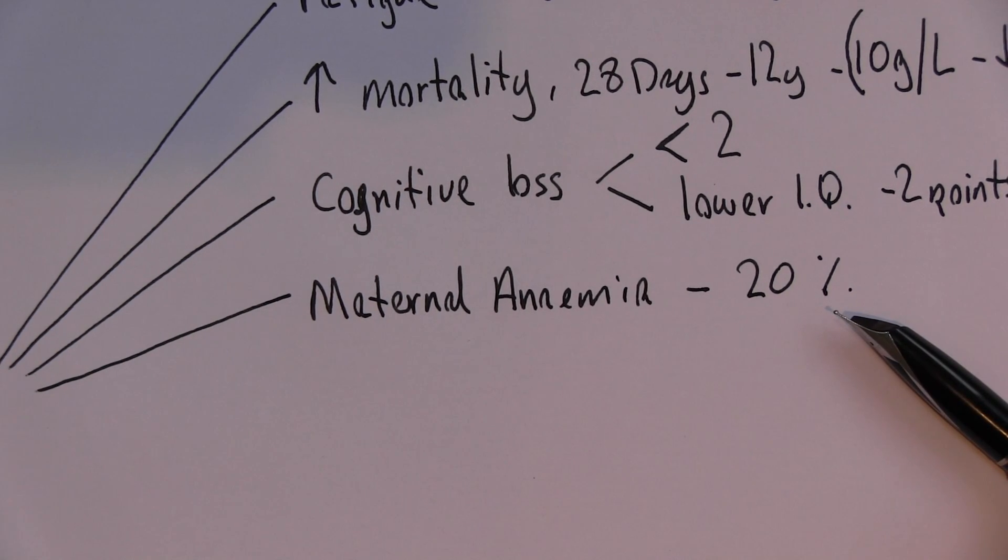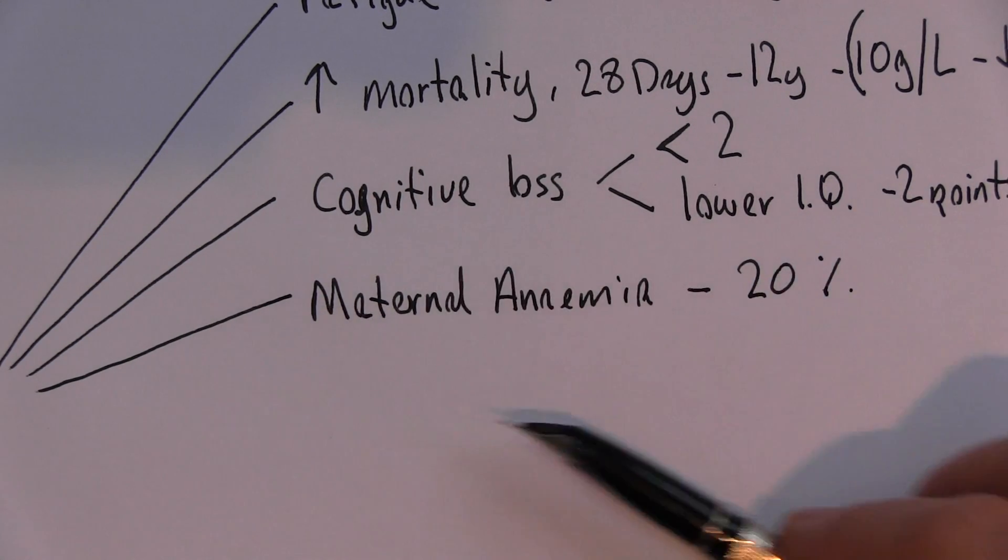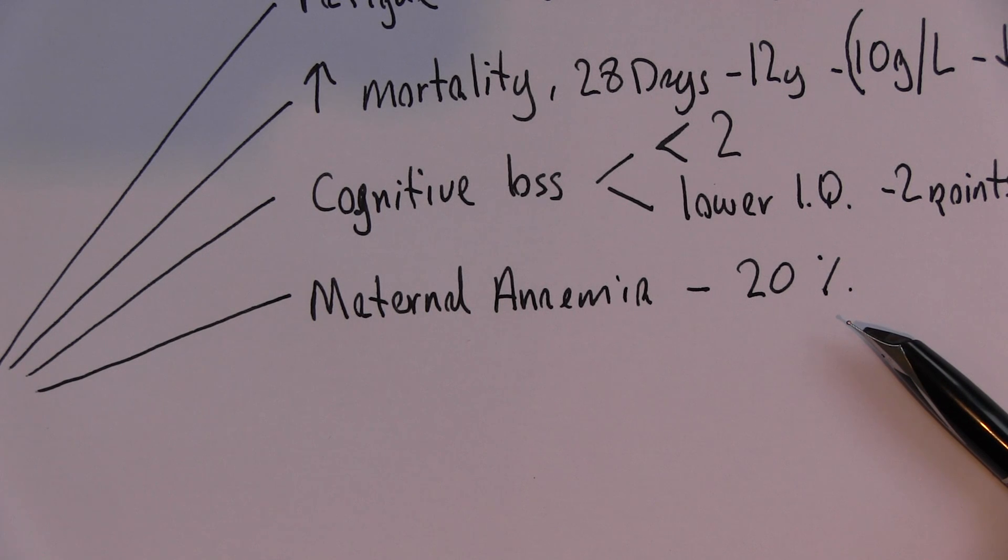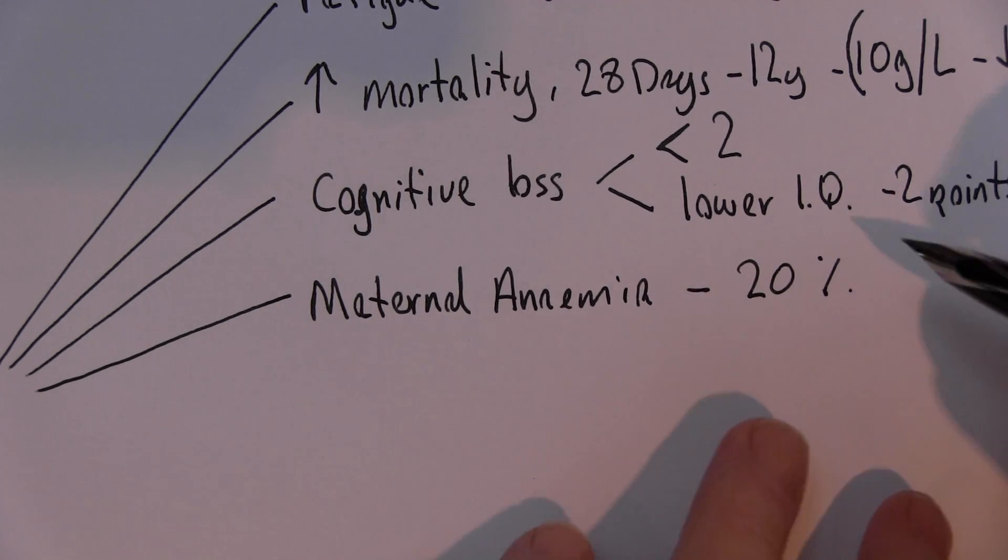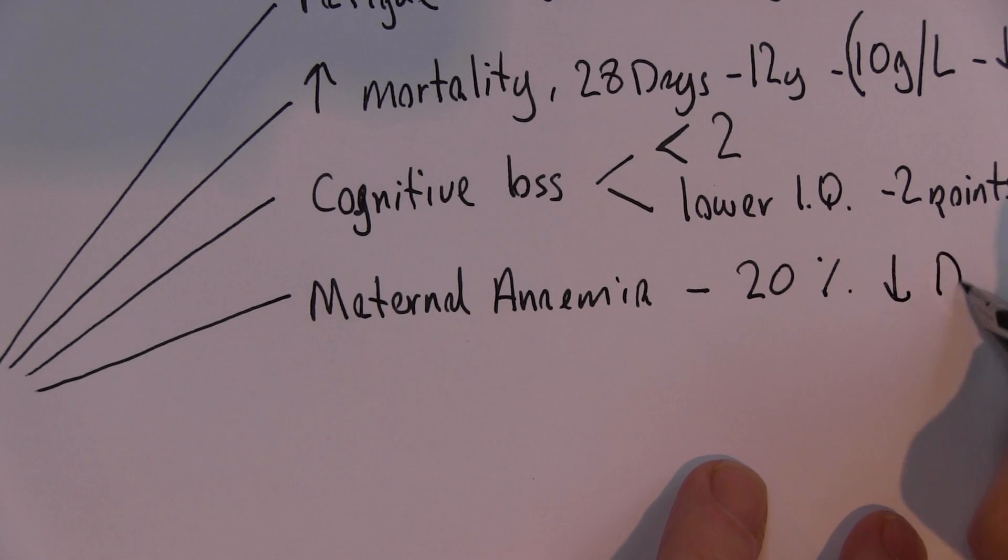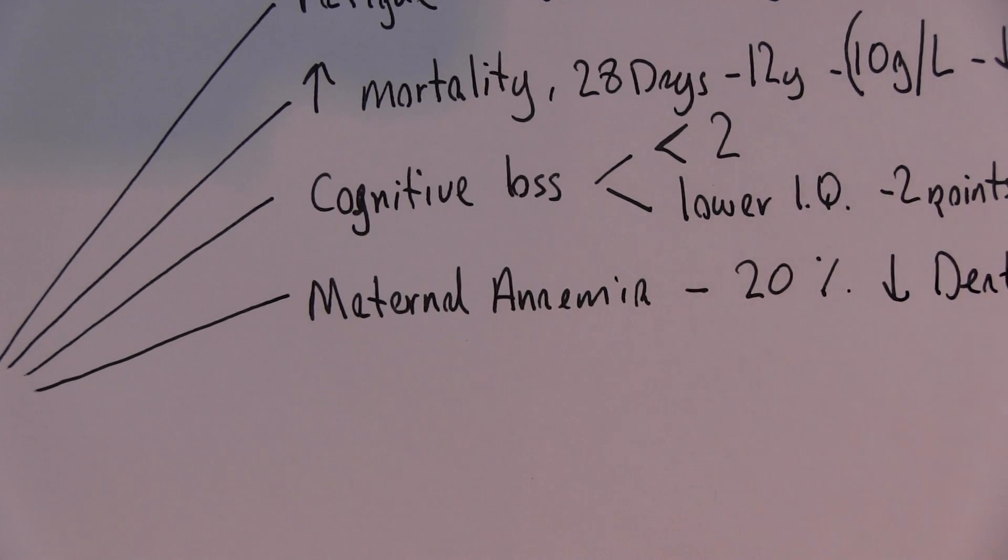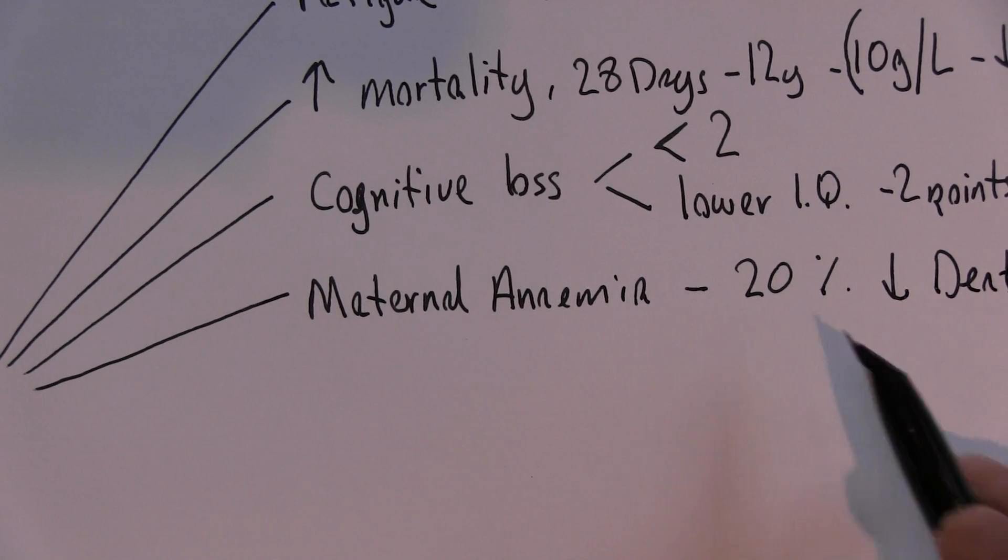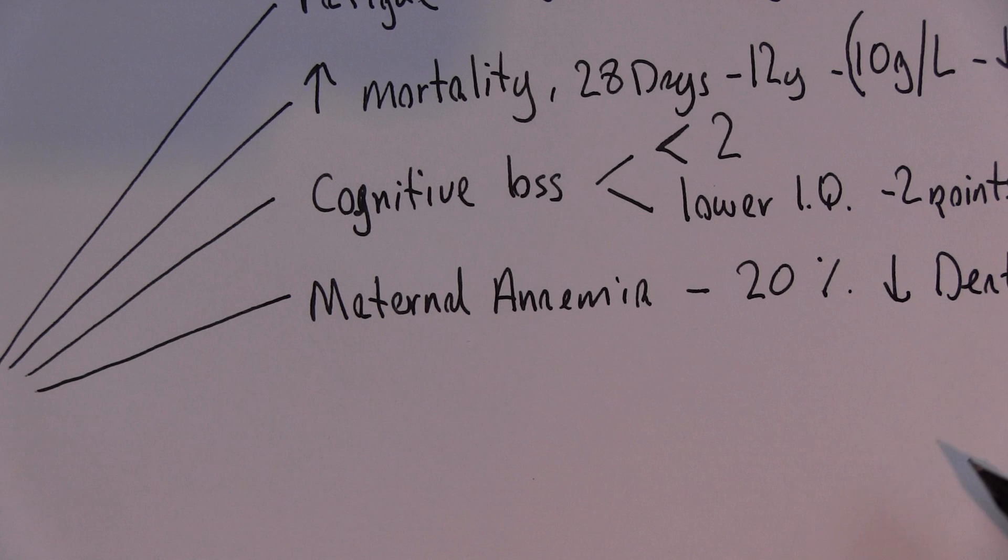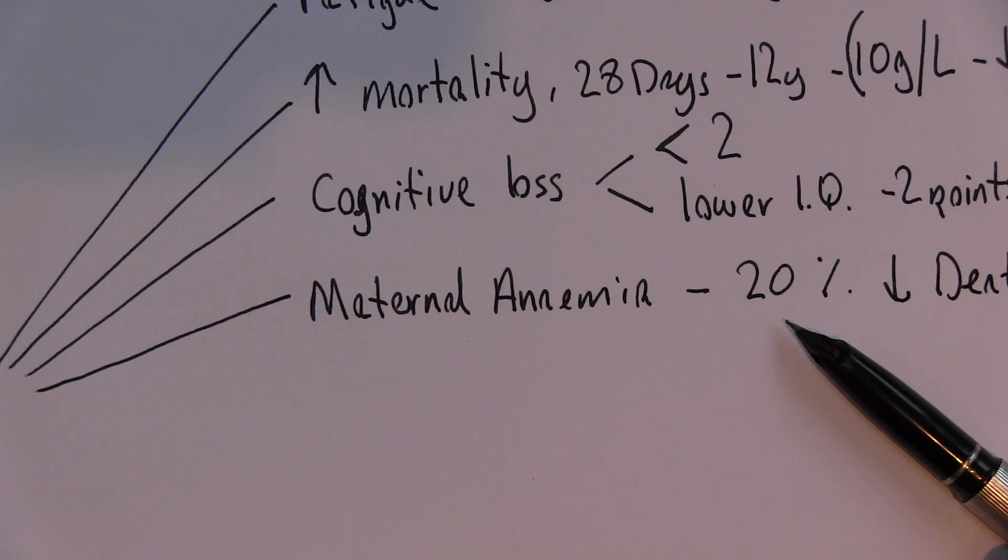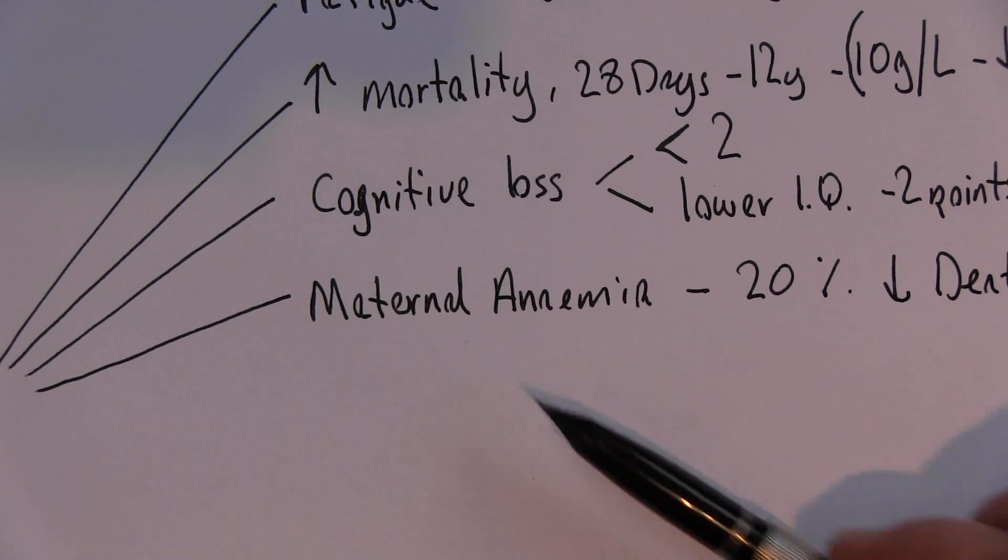So again, a simple intervention - correct maternal anemia as early in pregnancy as possible, preferably before conception. But that will reduce maternal deaths. And again, I've got a link below that shows in some areas, 20 to 40% of maternal deaths are associated with maternal anemia.